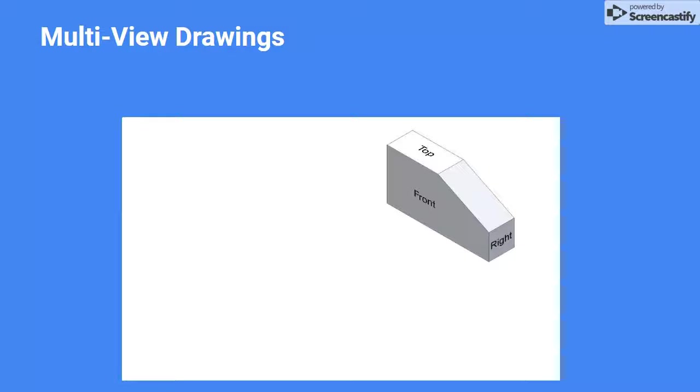Earlier I mentioned showing your orthographic views in correct orientation. This basically means showing them in the correct place on the page. Every drawing view has a correct spot on the page, and these views are determined by rotating the part in a certain way. If the part is rotated correctly, it results in correct orientation.